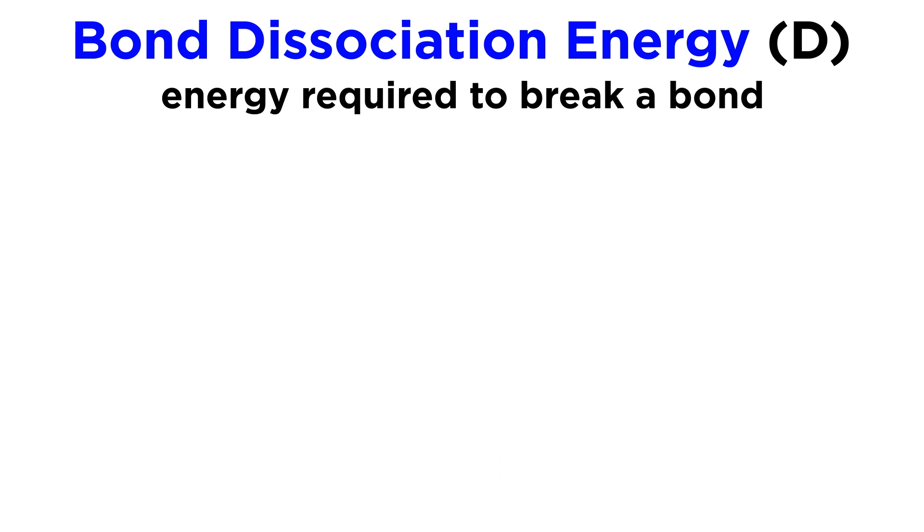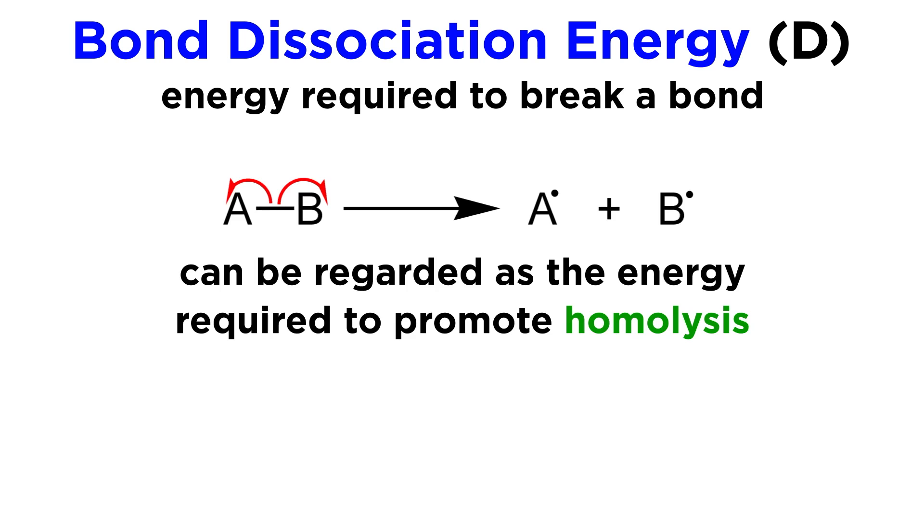Let's talk about the energy required to break a bond, which is called the bond dissociation energy, represented by the letter D. We can think of this as the energy required to promote homolysis of a particular covalent bond.